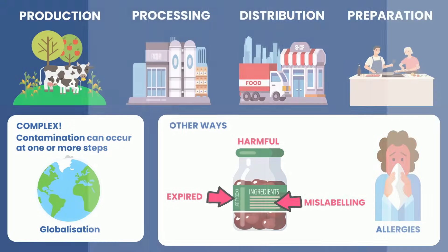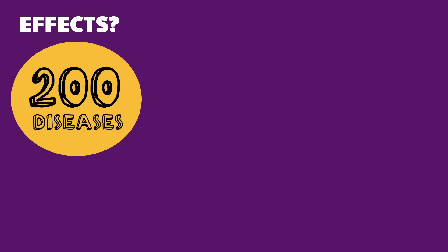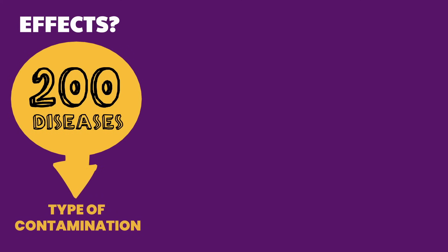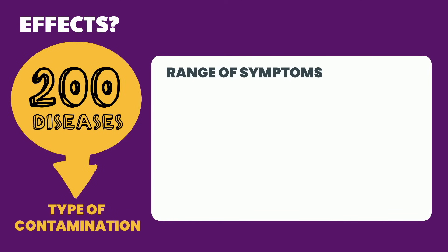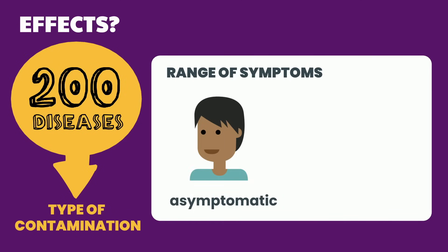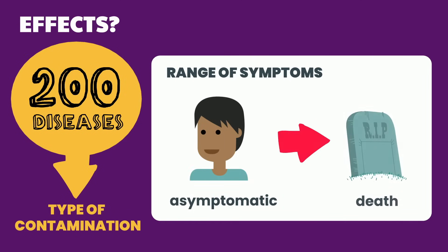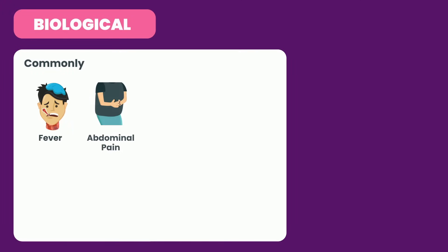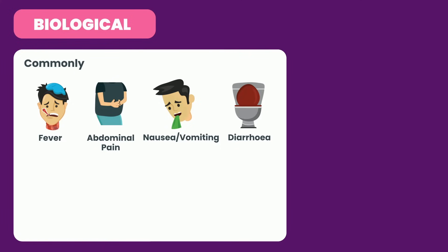Contaminated food can lead to over 200 different diseases depending on the type of contamination. There can be a range of symptoms, from asymptomatic illness to severe disease, and sometimes even death. Biological contaminants typically cause fever, abdominal pain, nausea or vomiting, and diarrhea. These tend to occur hours to days after exposure.